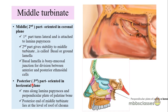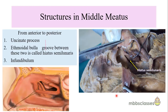The third part or posterior most part is oriented in the horizontal plane, running along the lamina papyracea and the perpendicular plate of the palatine bone. The posterior end of the middle turbinate coincides with the roof of the choana.